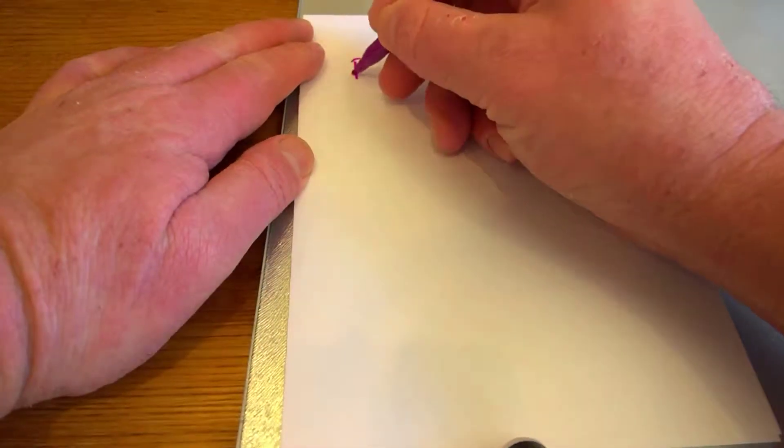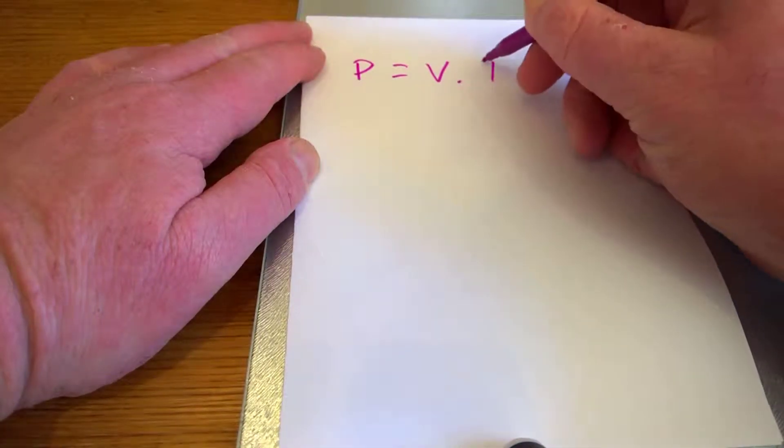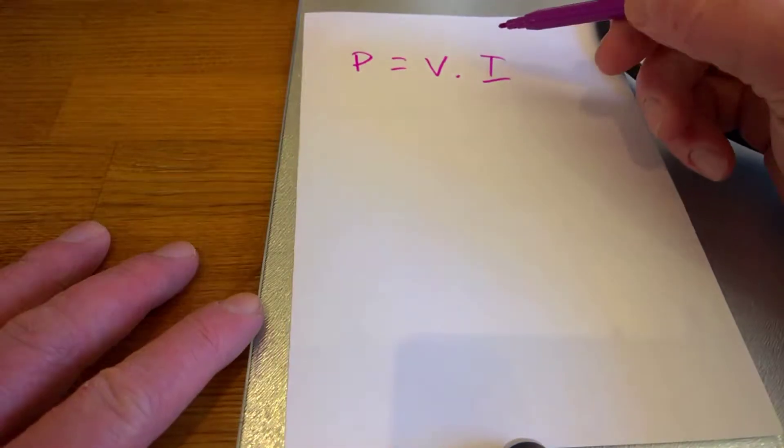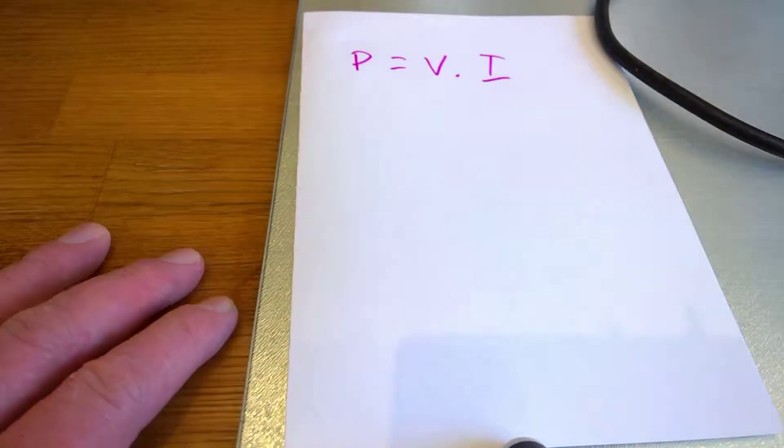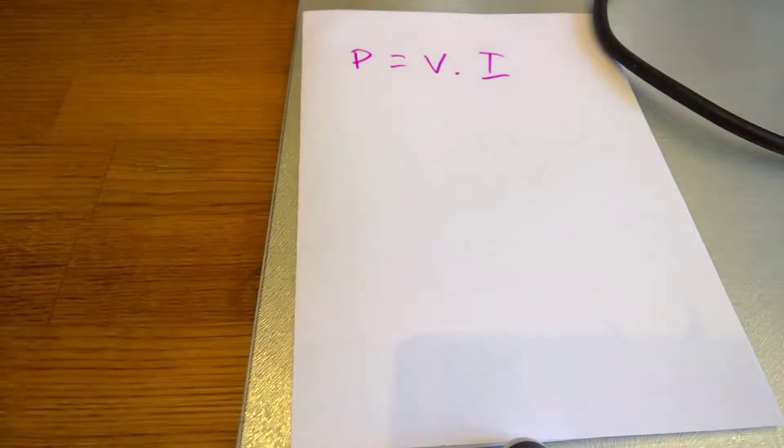So what I'll do is a quick little bit of theory on this. The power is voltage times the current used by the device, and the voltage that we're applying to the 3-in-1 grill is 240 volts, and the current that it draws is proportional to the resistance of the heating element.